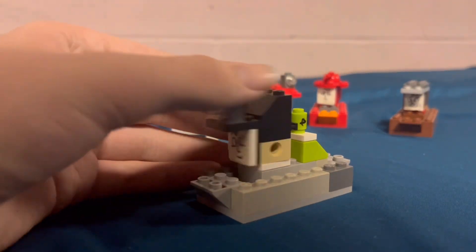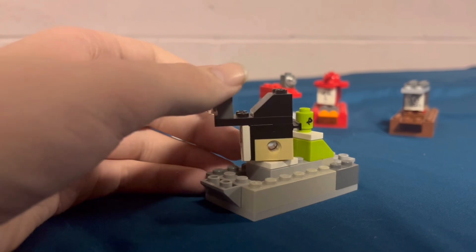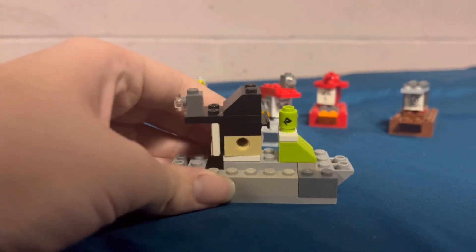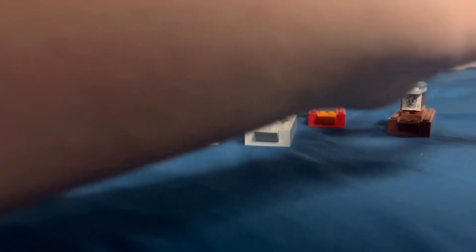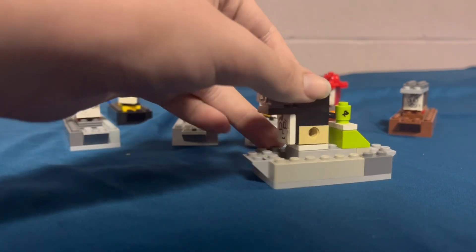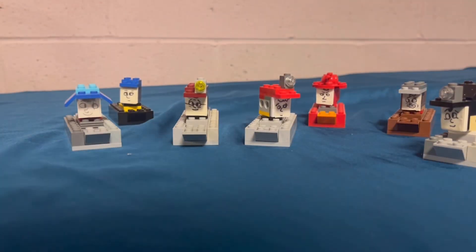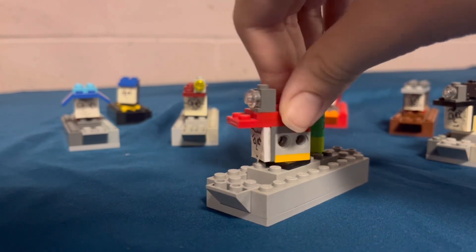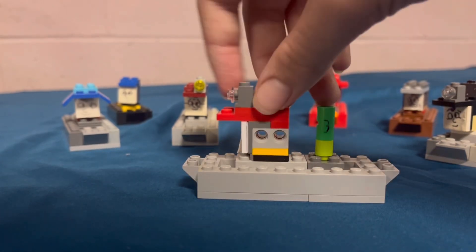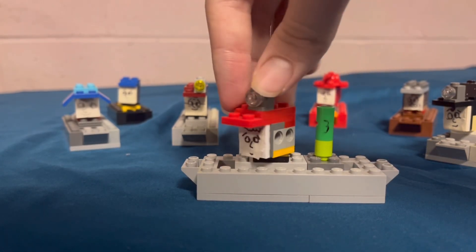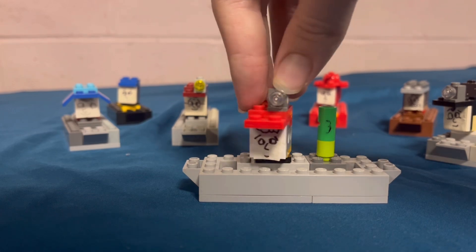We got Ariel. Named after the mermaid. She's a diesel switcher tug. Nothing much on here. She's just gray. Next up, we got Nathan. A harbor tug. Nothing much to say about him, too. He's just gray with a red cap.